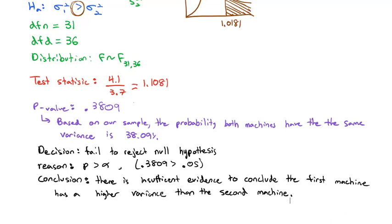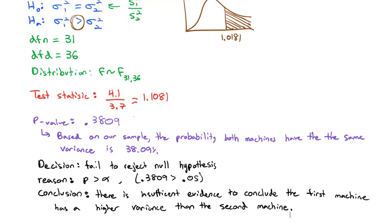That is how we compare two variances. We have a new distribution — the F distribution — which is a fraction of the variances. But the idea is still the same as the hypothesis tests we've been doing: null and alternative hypothesis, the test statistic gives us a p-value that we compare to alpha, and we make a conclusion whether or not we have sufficient evidence to believe the alternative hypothesis. Take a look at a few of these on your own, and we'll talk about comparing two variances more in class.